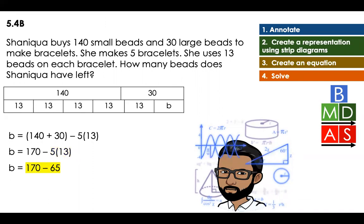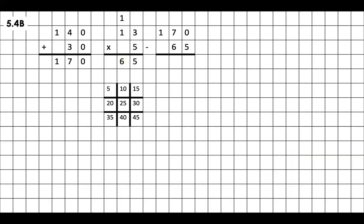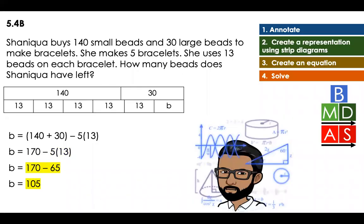Now I just have to subtract 170 minus 65. That's going to be equal to 105. 105 beads left. That's it. That's my answer for this exercise.